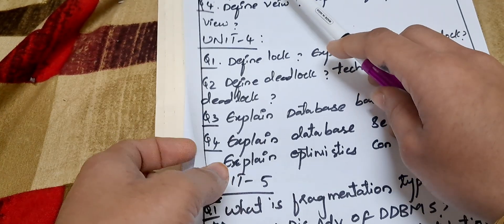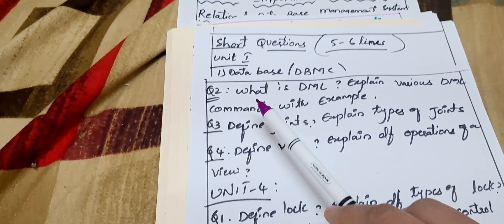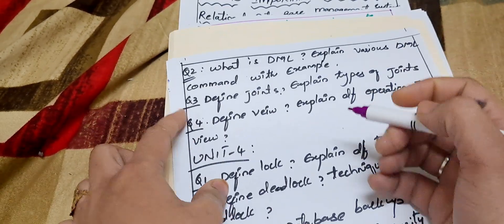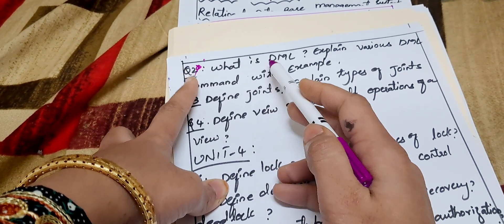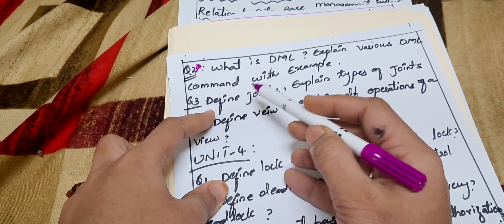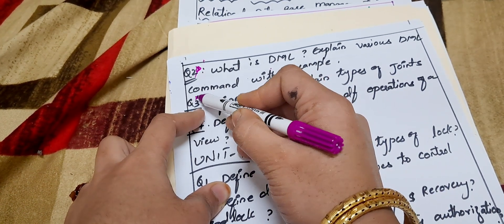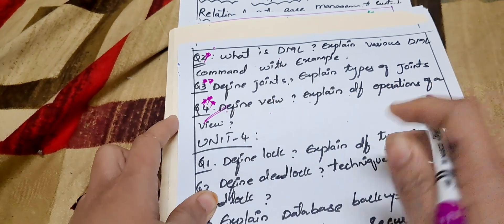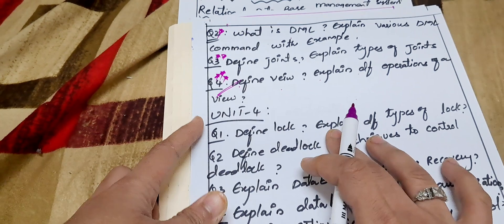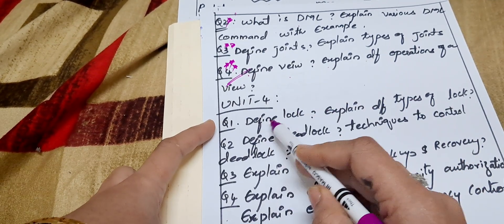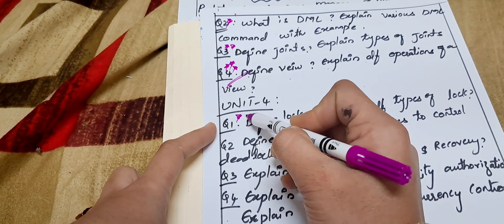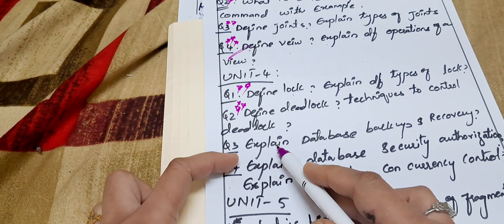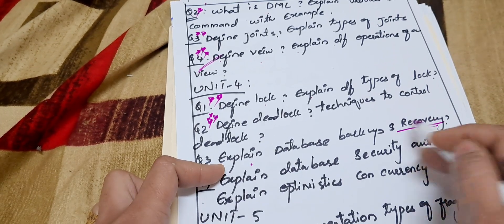For Unit 3, the important questions are: Question one — what is DDL, explain various DDL commands with examples. Question two — define join and explain the various types of joins. Question three — define view and explain the different operations of a view. This is a very most important question. Try to learn all the questions I am giving you.